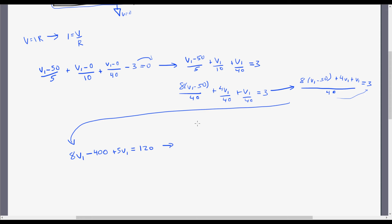Or if I continue solving, I get 13 V1 is equal to 520, right? If I take this 400 and add it to the 120 to the other side of the equal sign, I get 520.